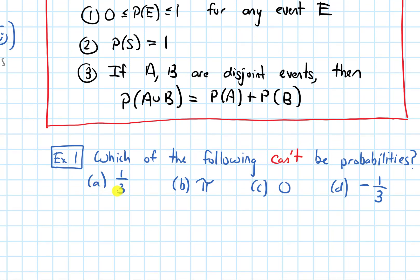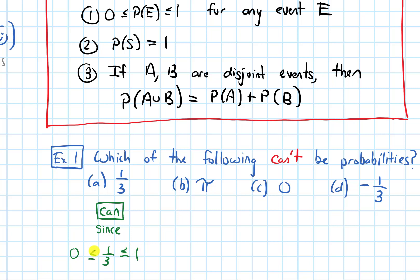Part A is the number one-third. One-third can be a probability since it is a value between zero and one, which is the condition required by axiom 1. For parts B, C, and D, pause the video for one minute to try the remaining ones.